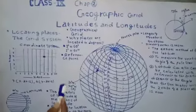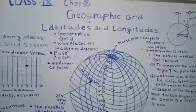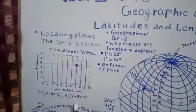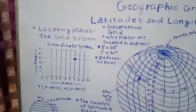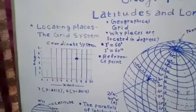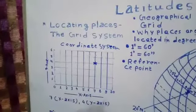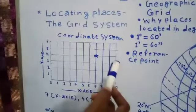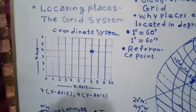Let's begin this chapter with the coordinate system. We will differentiate the coordinate system with the geographical grid. The location of a place on the earth's surface can be located through the help of a coordinate system.